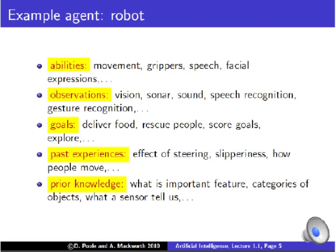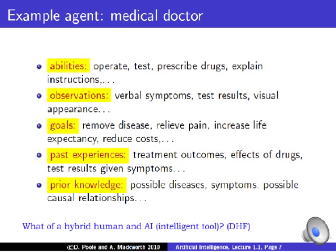Here's an example of an agent: a robot. Depending on the nature of the robot, it may be a humanoid robot that can move and walk, or grip things. If it's a factory robot, it can grip things coming along an assembly line. Many robots speak, and they can have facial expressions and gestures. Observations come in different modalities — vision, sonar, sound — and more sophisticated robots can recognize speech and gestures. Goals vary by robot type: delivering food, rescuing people, or playing soccer. I know of no robots that can play human-level soccer, but they can play some pretty decent robot soccer.